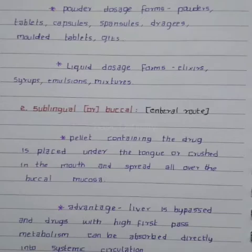The oral route is given in two forms: powder form and liquid form. Powder dosage forms include powders, tablets, capsules, spansules, dry granules, modified-release tablets, and gastro-intestinal therapeutic drugs. Liquid dosage forms are given as elixirs, syrups, emulsions, and mixtures.